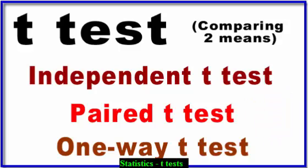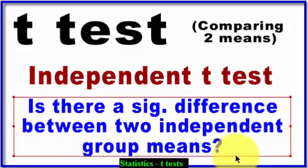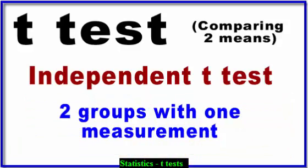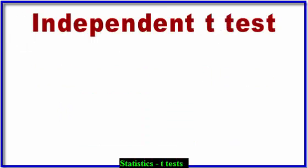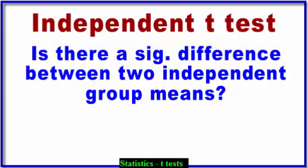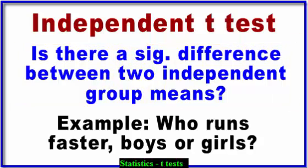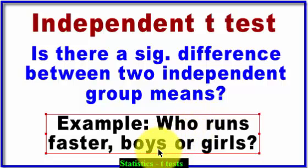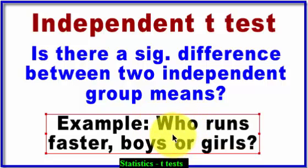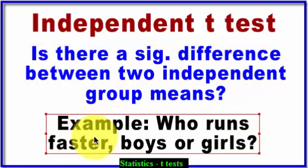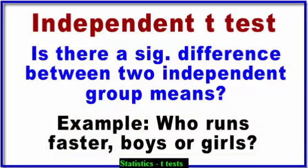Let's start with the king of the t-test: the independent t-test. Is there a significant difference between two independent group means? Two groups, one measurement. Here's an example: who runs faster, the boys or the girls? Two groups — boys and girls — and how fast they run is your dependent variable. How fast they run is the DV.